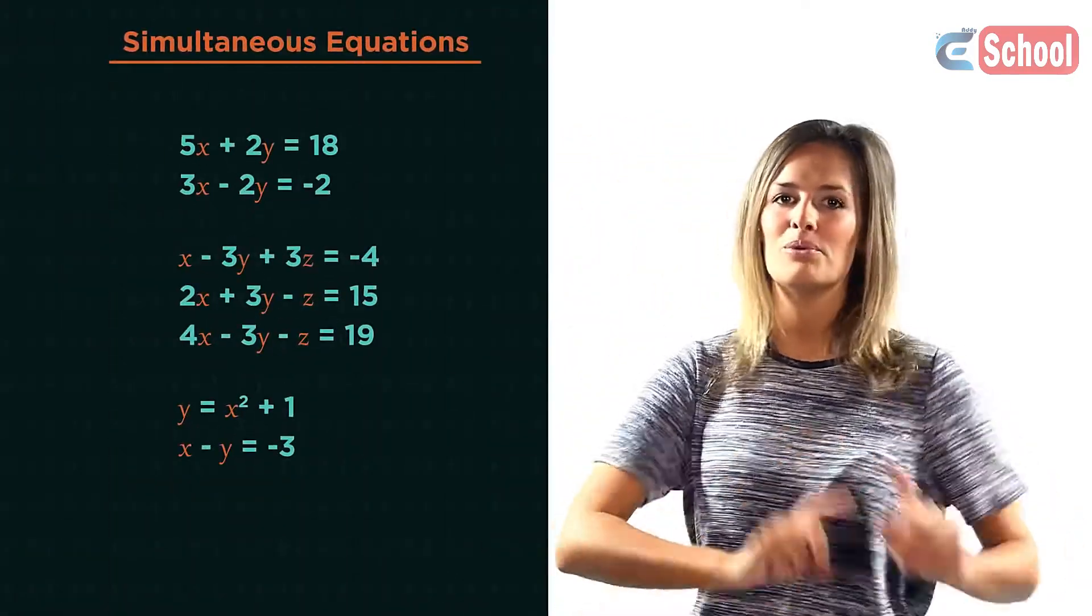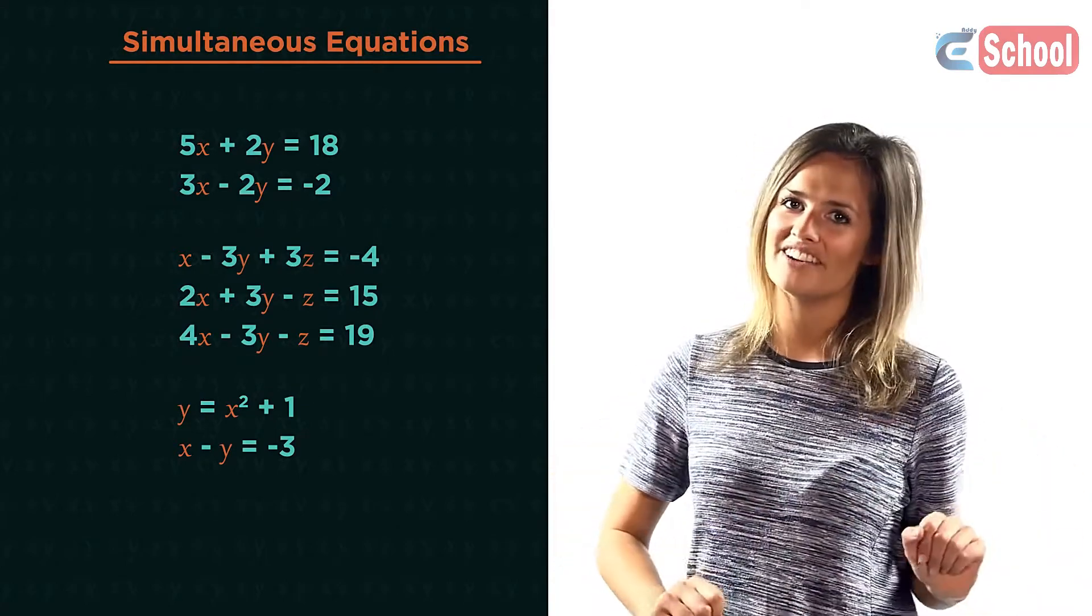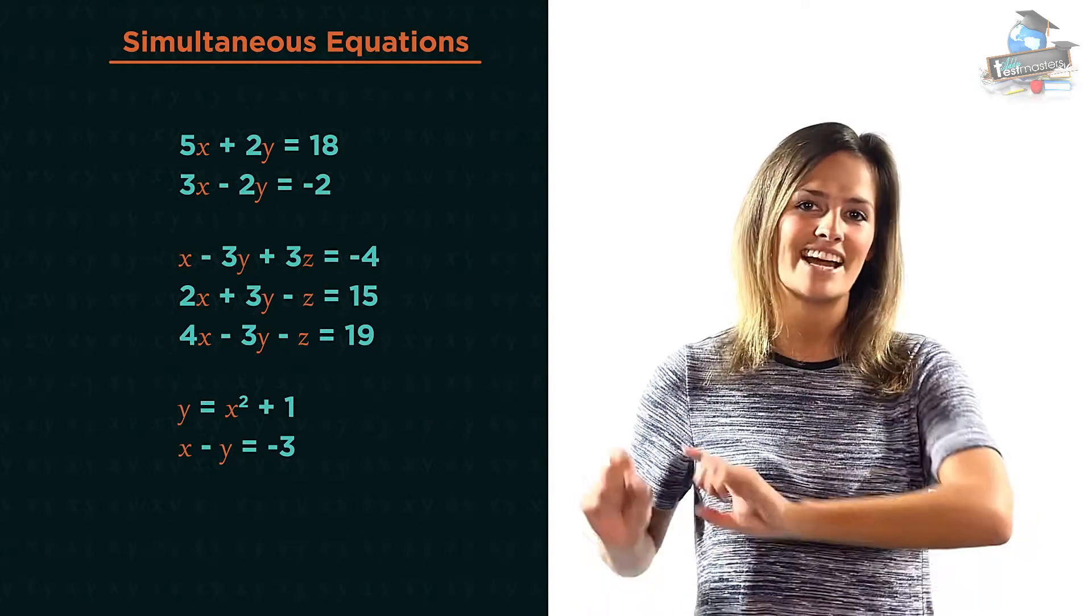In this video we're going to discover what simultaneous equations are and how to solve them. Simultaneous equations are two or more equations with two or more unknowns. They're called simultaneous because they need to be solved at the exact same time.